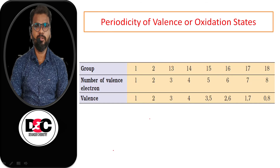Looking at the group numbers: Group 1 has 1 valence electron and valency 1. Group 2 has 2 valence electrons and valency 2. Group 13 has 3 valence electrons and valency 3. Group 14 has 4 valence electrons and valency 4. For Group 15 with 5 valence electrons, the valency can be 3 or 5. Group 16 with 6 electrons gives valency 2 or 6. Group 17 with 7 gives valency 1 or 7. Group 18 with 8 gives valency 0 or 8.